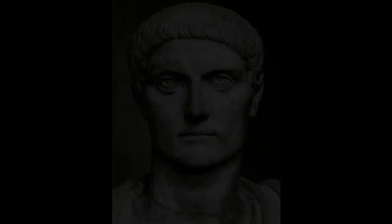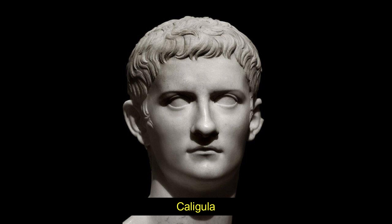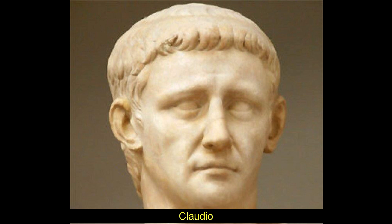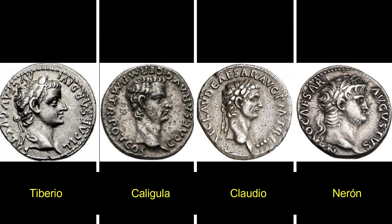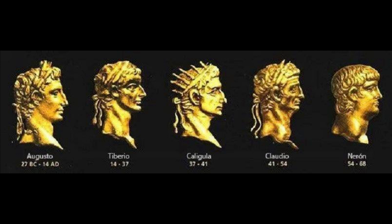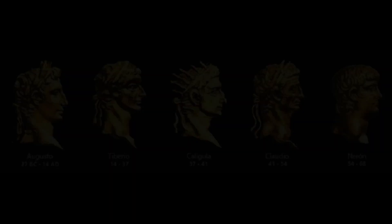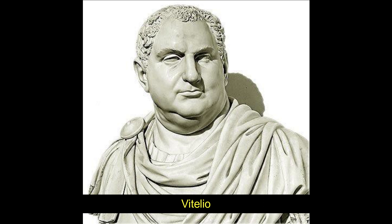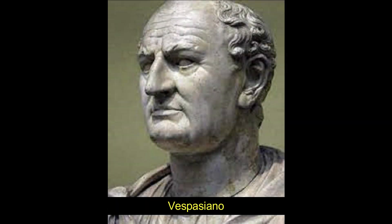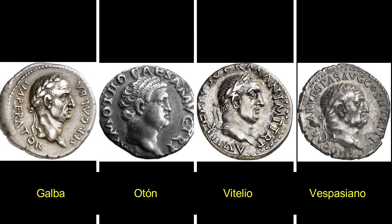Tras este gran primer emperador, vinieron otros grandes nombres de la misma familia: Tiberio, Calígula, Claudio y Nerón, todos de la dinastía Julio-Claudia. Tras esta dinastía, Roma fue gobernada por otros cuatro emperadores importantes: Galba, Otón, Vitelio y Vespasiano, todos ellos de la dinastía Flavia.